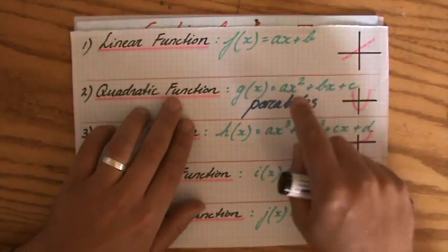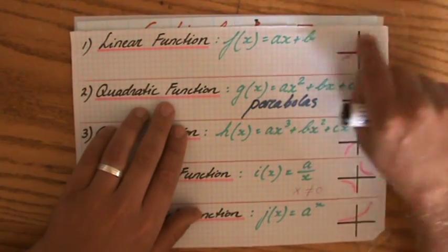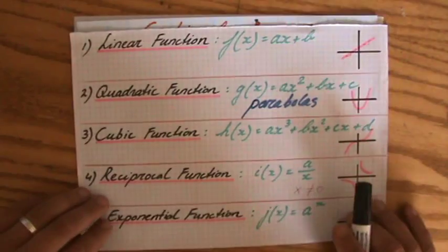Unlike a quadratic function where the highest power of x is 2, which is a parabola, or a linear function with 1 being the highest power of x, which is always a line.